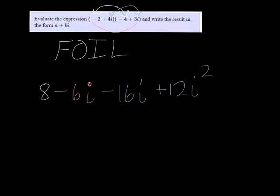i squared is equal to negative 1, so that's going to turn into a minus 12. And these two terms in the middle combine to be minus 22i.